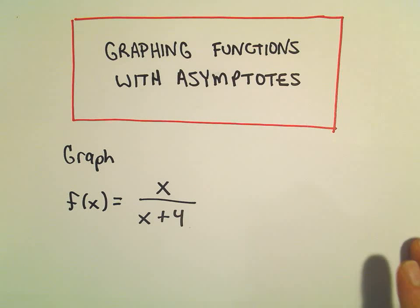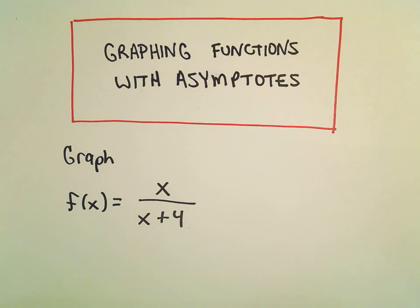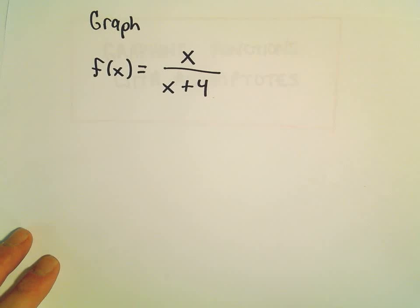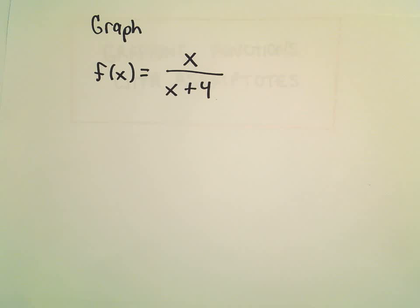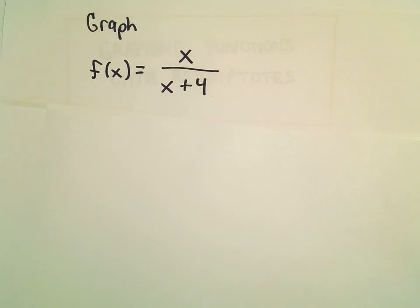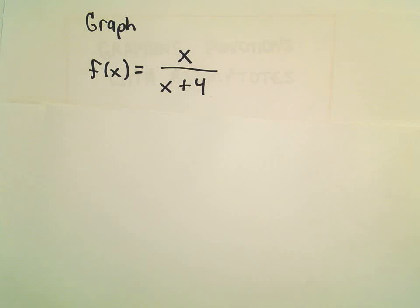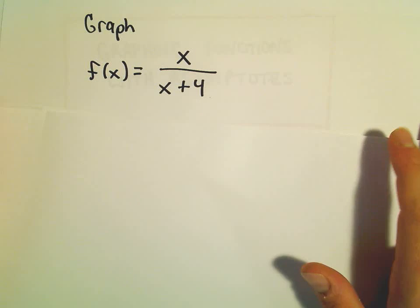In this video we're going to graph a function that has both a horizontal and vertical asymptote. We're going to graph f(x) = x over x plus 4. There are a few different things I'm going to think about: domain, vertical and horizontal asymptotes, limits, regions of increase and decrease, and concavity. So, a little bit of everything here.